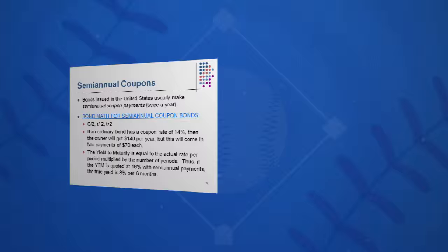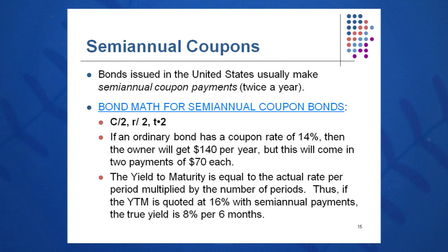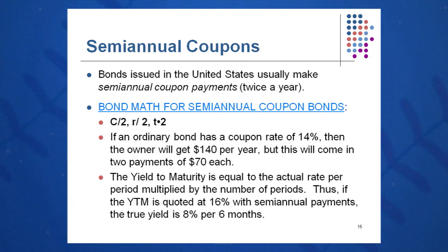A bond issued in the United States usually makes two payments a year — semi-annual. Whenever you see a semi-annual coupon, do some mathematical manipulation first. Instead of getting $80 a year, you'd get $40 each payment. To keep apples to apples, take R divided by two as well. Because you're dividing your coupon by two and your coupon rate by two, you take R by two also. You'll be visiting the paying agent twice a year — 60 times over a 30-year bond — so take T times two. Simply: C by two, R by two, T times two.